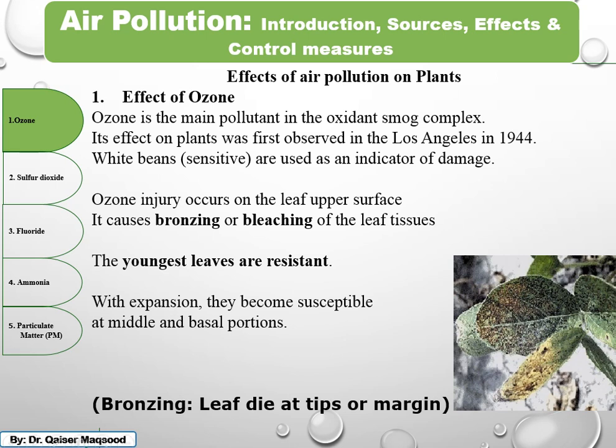The effect of ozone on plants was first observed in Los Angeles in 1944, where white beans were most sensitive. Ground-level ozone is harmful to plants — when ozone is in the stratosphere it filters ultraviolet rays and is not dangerous, but ground-level ozone damages plants by causing bleaching of the chlorophyll content, which removes the green color.